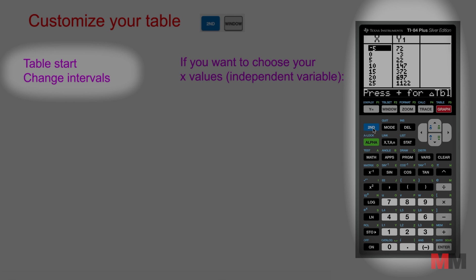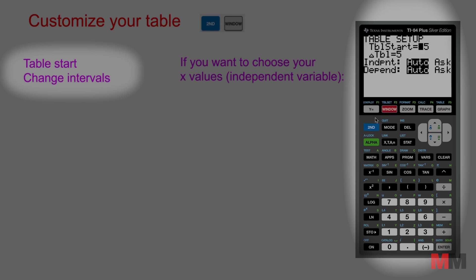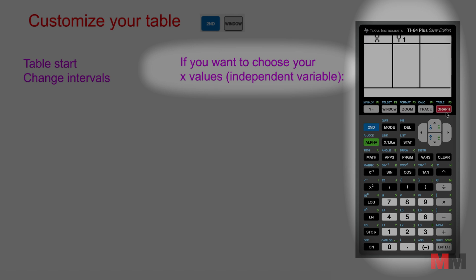And the last option I want to show you, so just go back to 2nd window to change those options. Let's go back to this bottom option right here where it says independent, independent variable. Used to be on auto and now let's change that to ask and press enter.